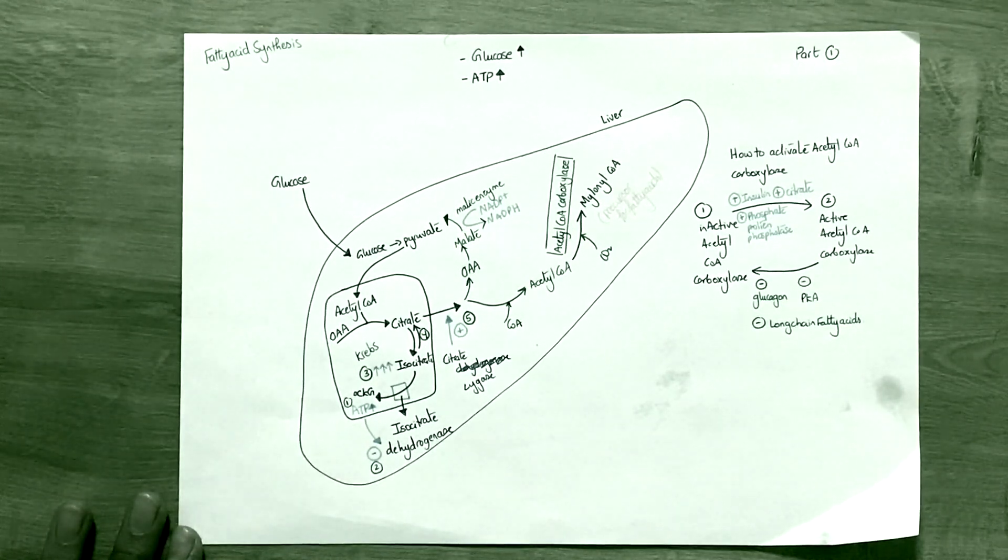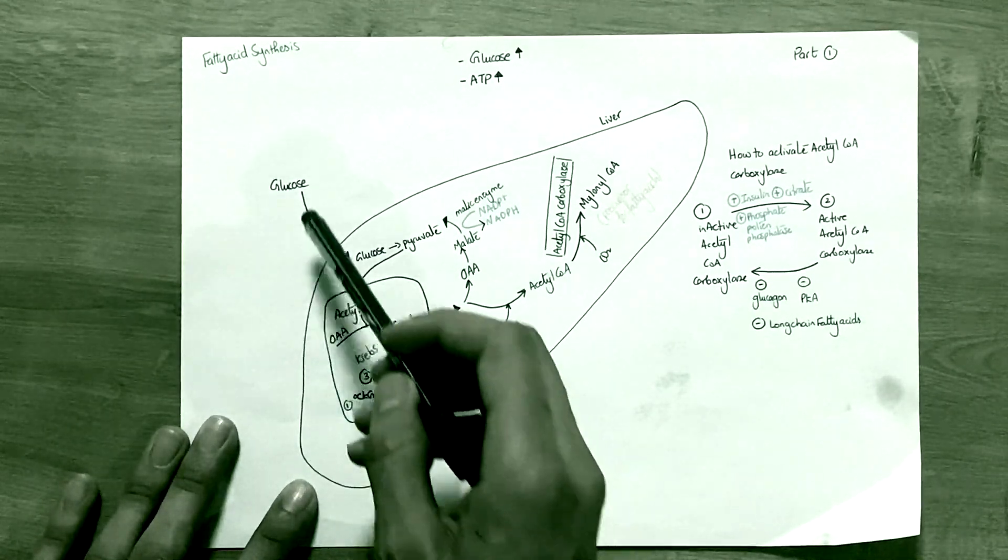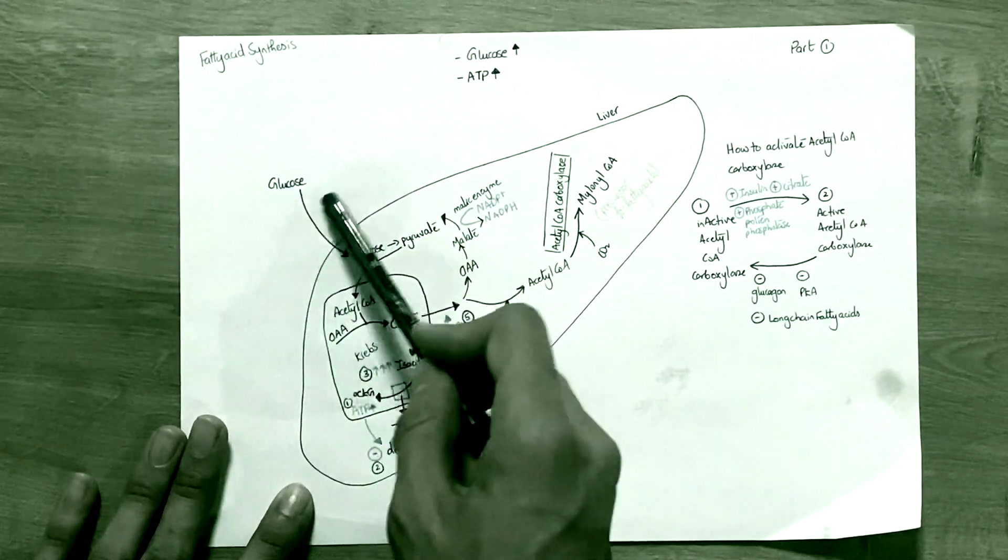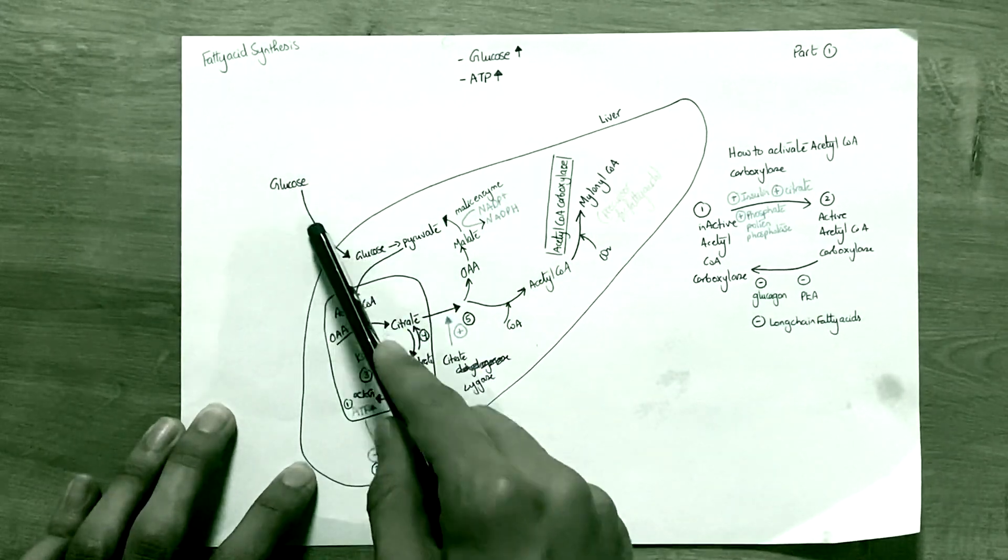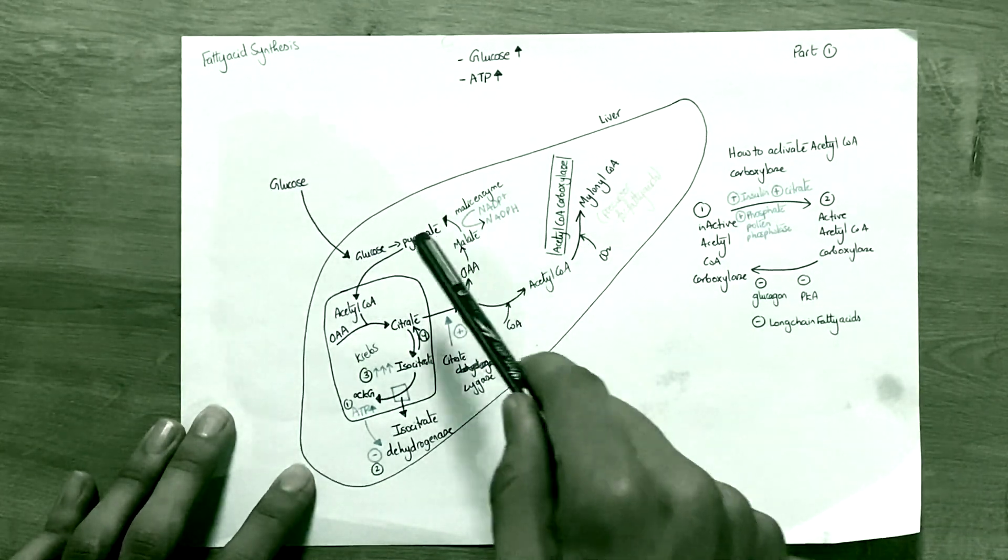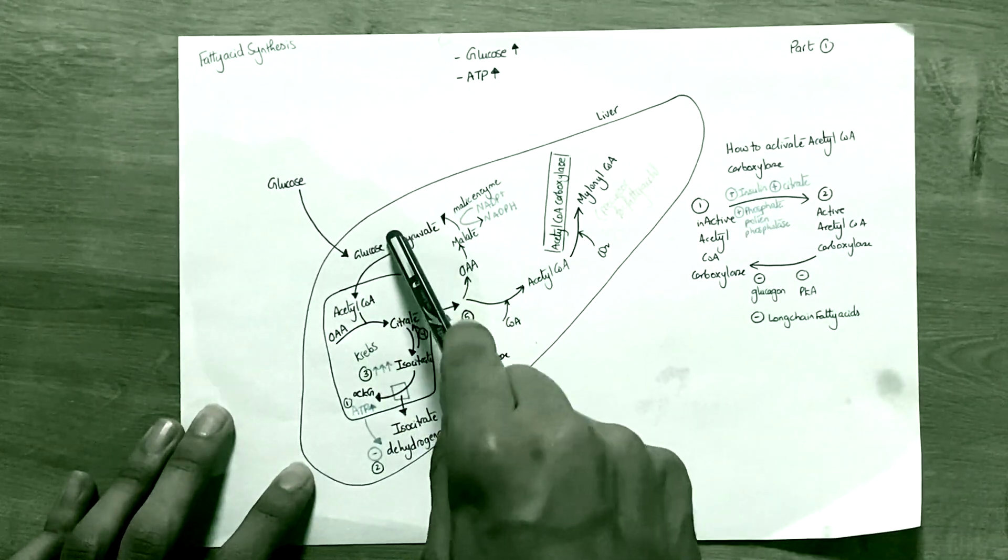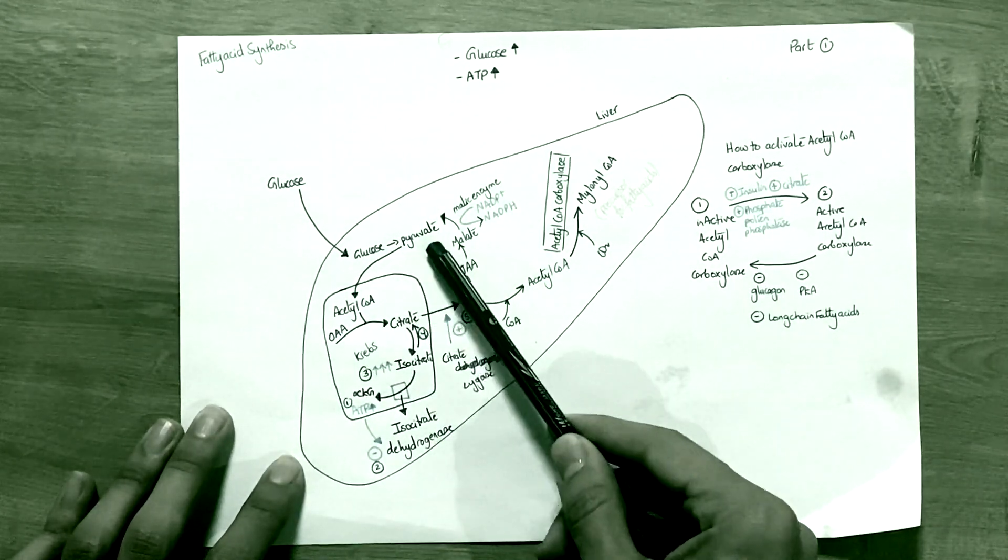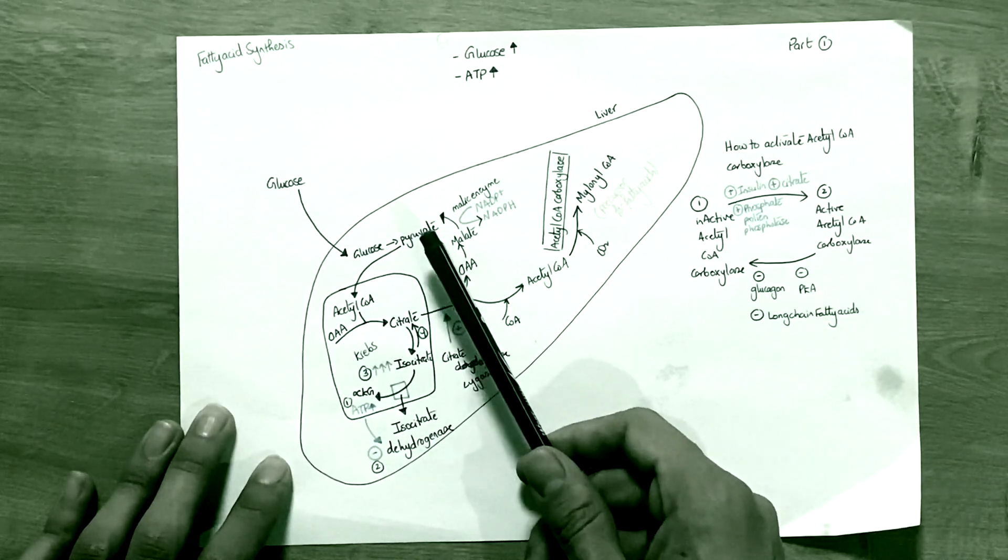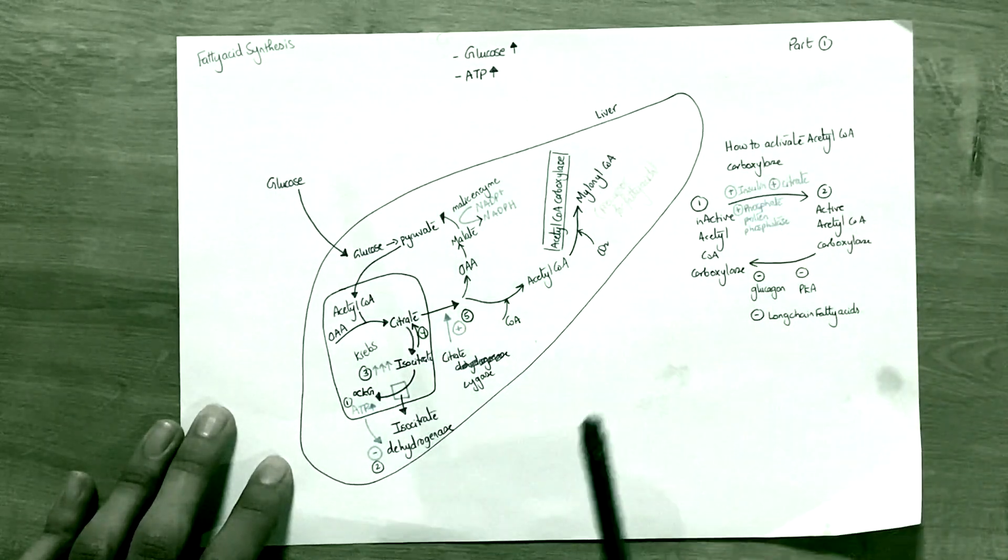First, we have glucose from wherever the source is, maybe a very sugary meal. As it enters the blood system, it is taken care of in the liver. The glucose is then converted into pyruvate, pyruvate is then converted into acetyl-CoA, and acetyl-CoA goes into the Krebs cycle.